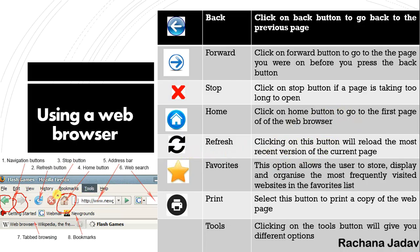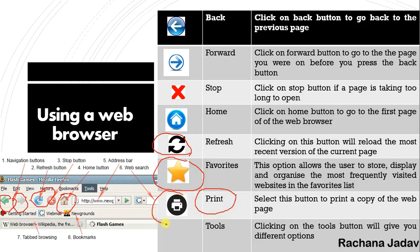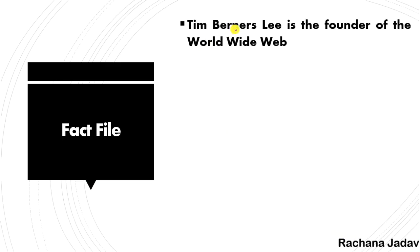Home takes you back to the home page — the first page of the web browser. Refresh reloads the page — if a page is taking time or has hung, you can refresh it. Favorites: if you like a website and want to use it every time, you can add it to Favorites — like a bookmark. Print: if you want to take a printout, the print option is available. There are also many other tools provided.